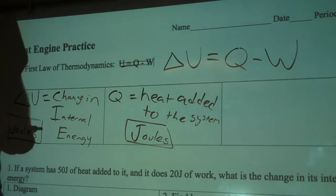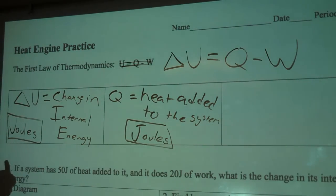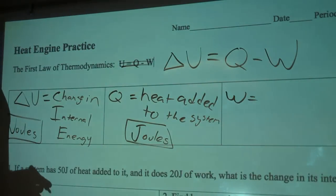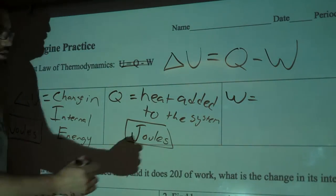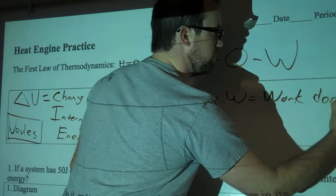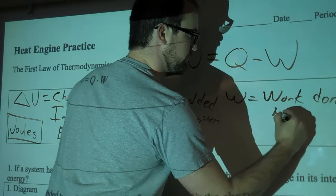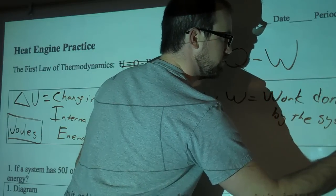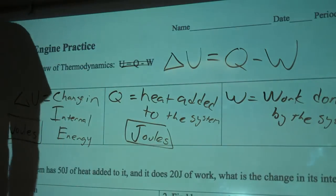And last off, we've got W, and W is work done by the system. Q is joules. Yep. So work is done by the system.